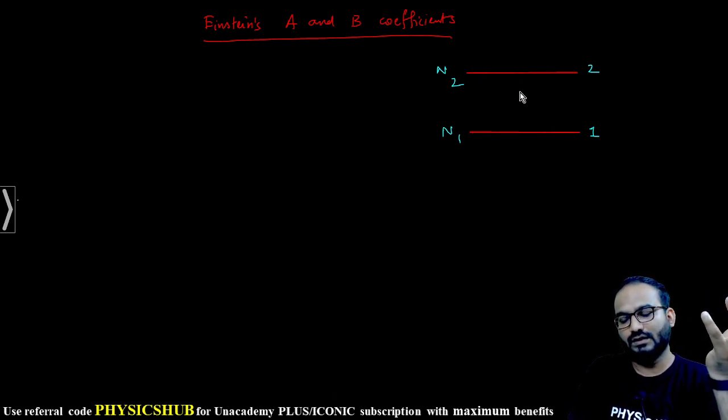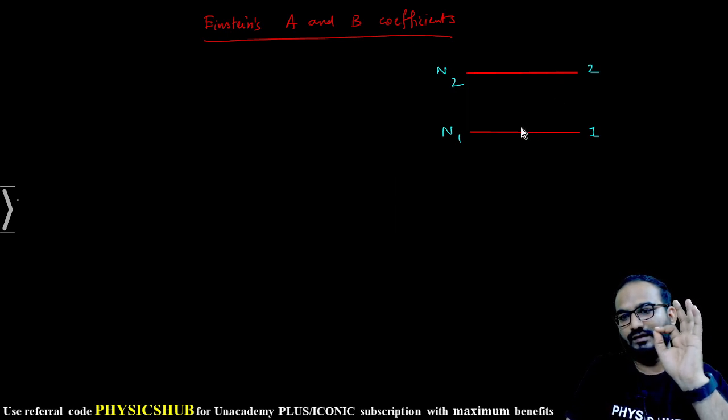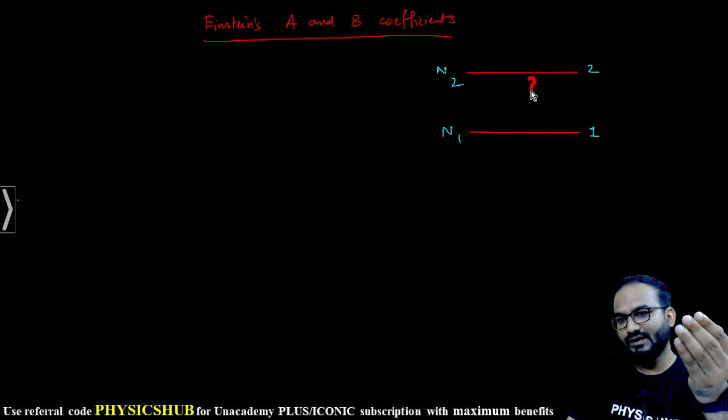What are the possible modes of transition? From 1 to 2, absorption may happen. From 2 to 1, emission may happen. To get the absorption you must supply some energy, otherwise it will not go to the higher state. But to release from 2 to 1, it can be spontaneous as well as stimulated.